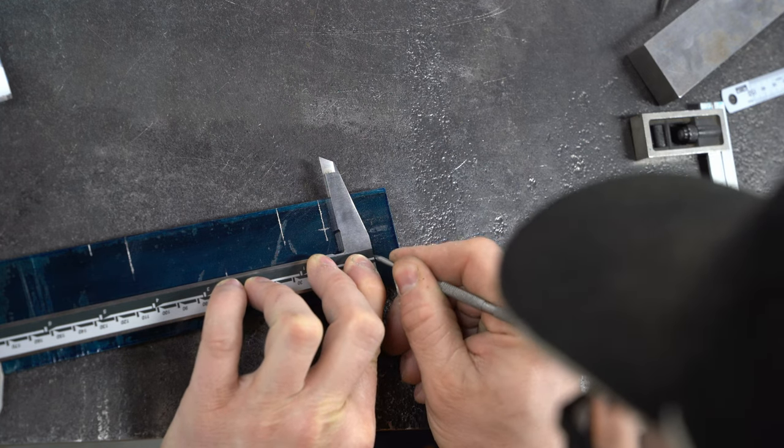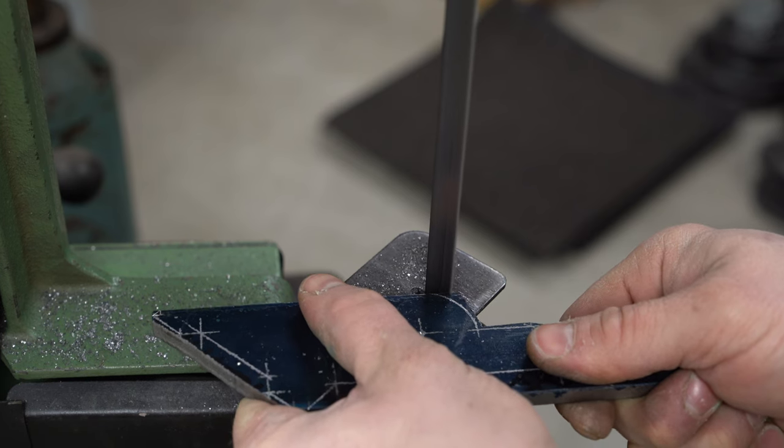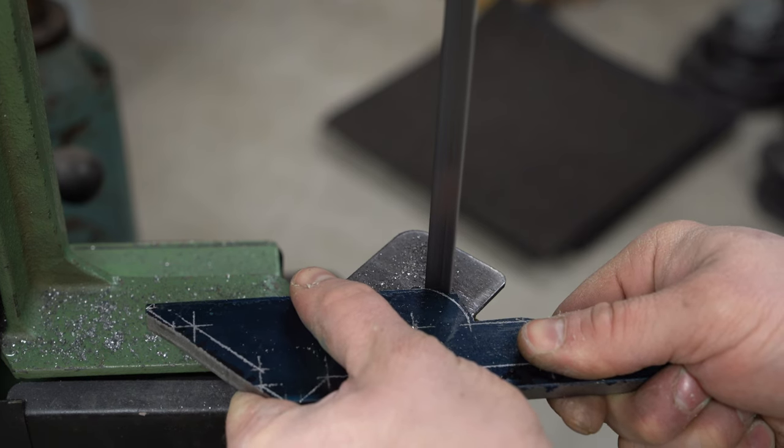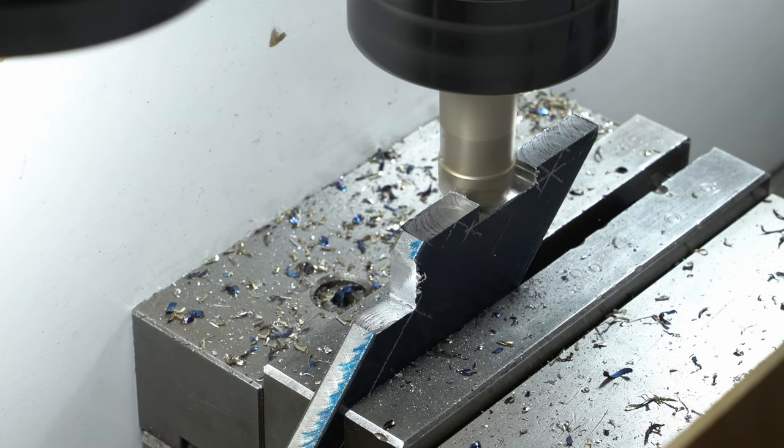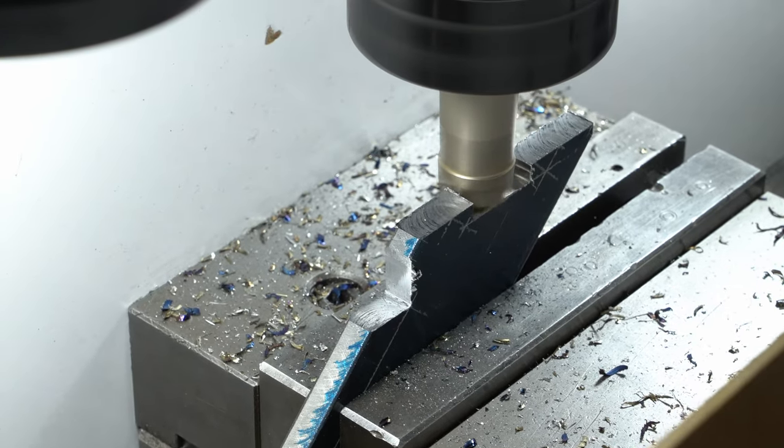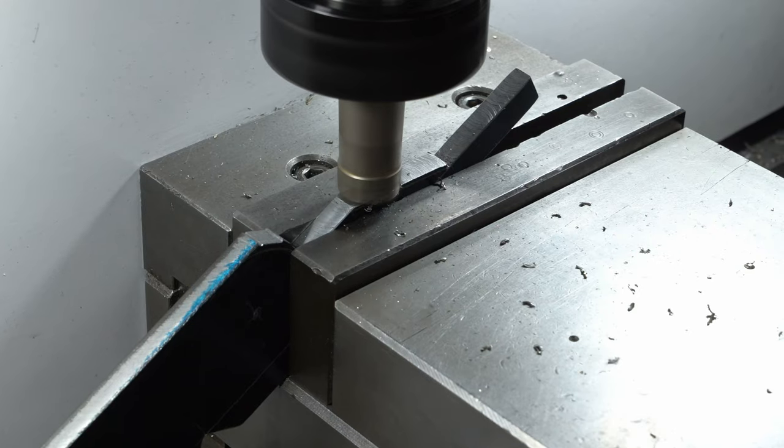Here we're marking out the tracking and tension arm. Never mill what you can bandsaw. I rough it out with the bandsaw and then mill up to the lines with the mill. I used the lines to set the angle of the part in the vice with a parallel or an adjustable parallel.